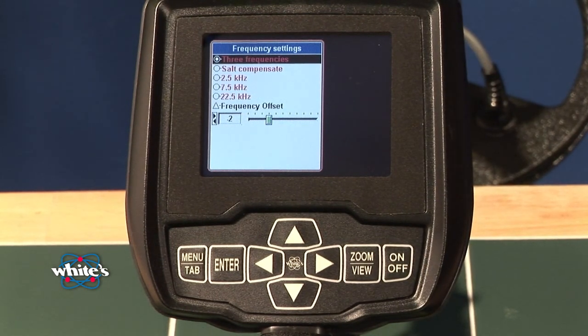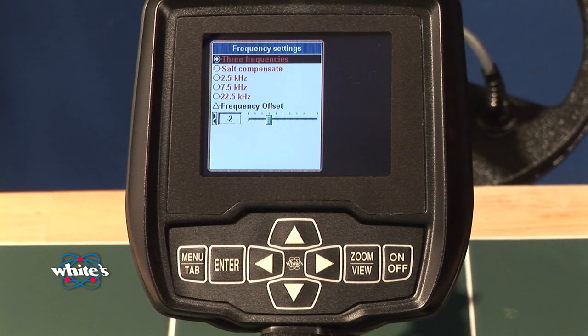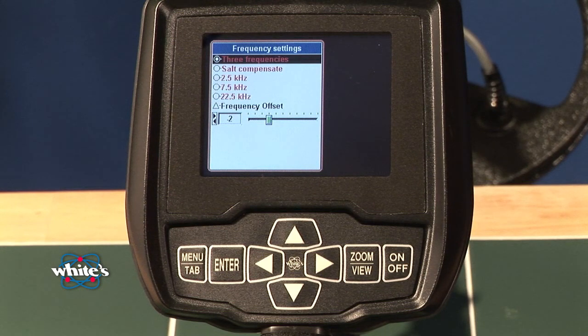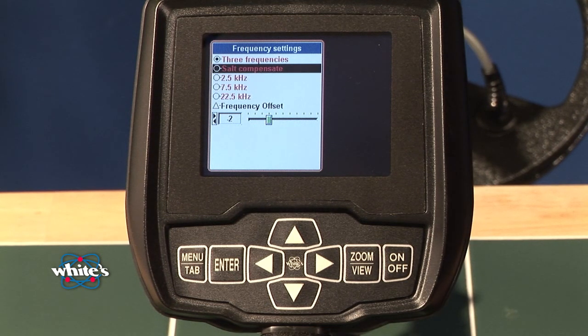These are the multi-frequency options. Three-frequency is your typical search mode that's transmitting and receiving all three of the frequencies. Salt Compensate is also considered a three-frequency mode. It does use a subtraction technique to deal with the ocean salt water, which is conductive.